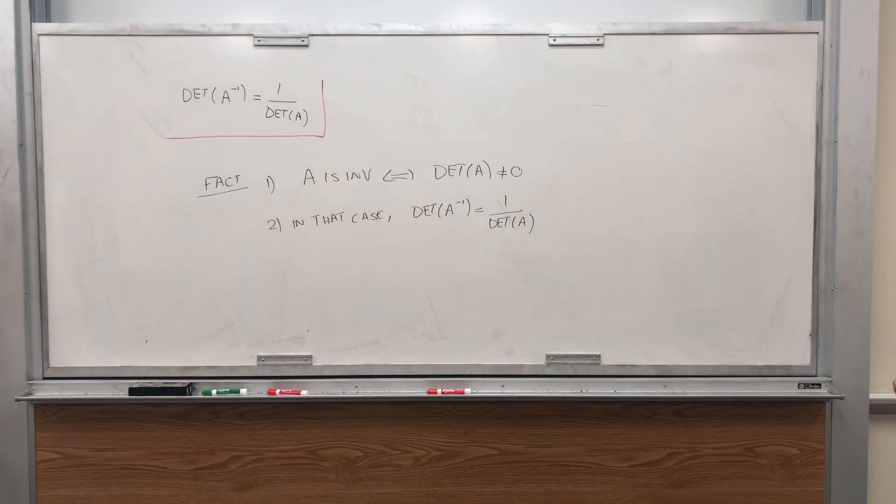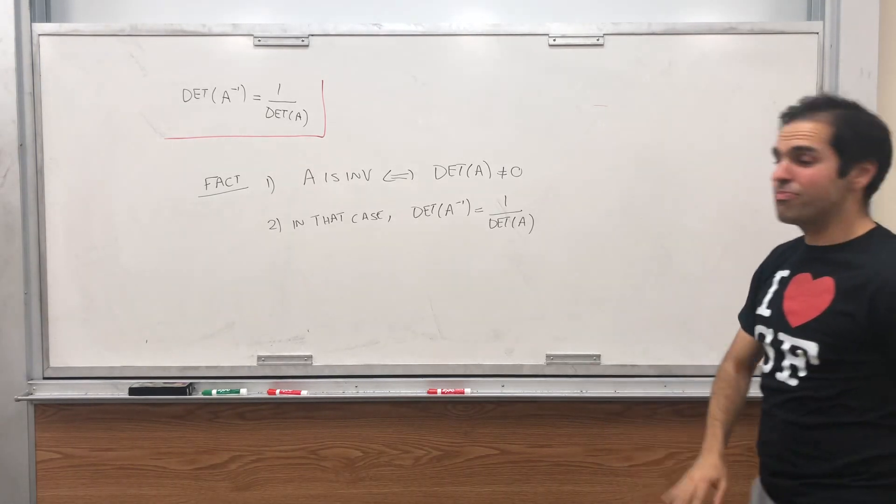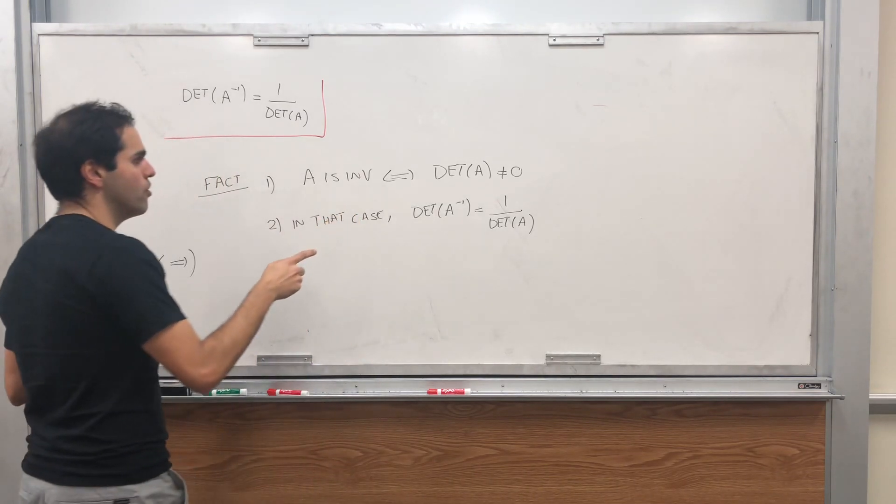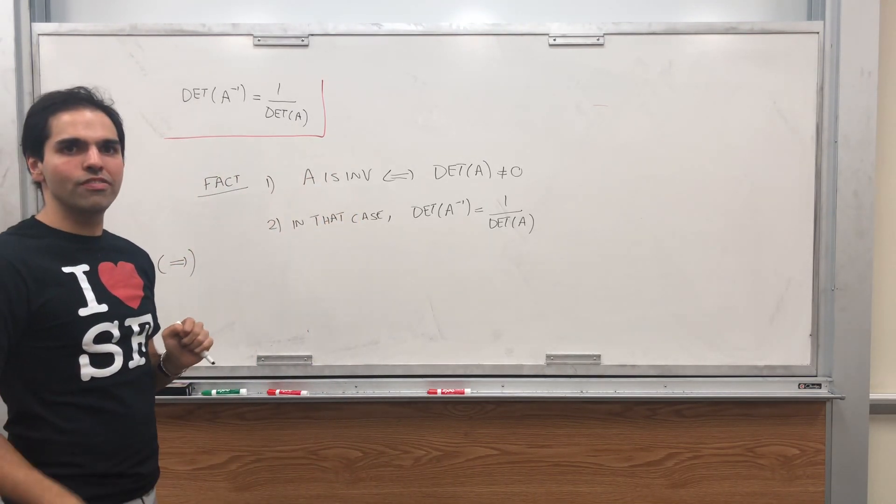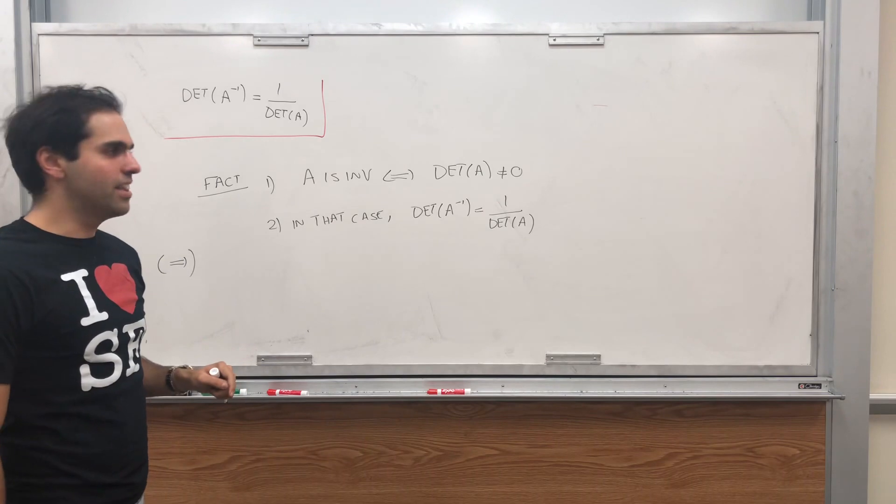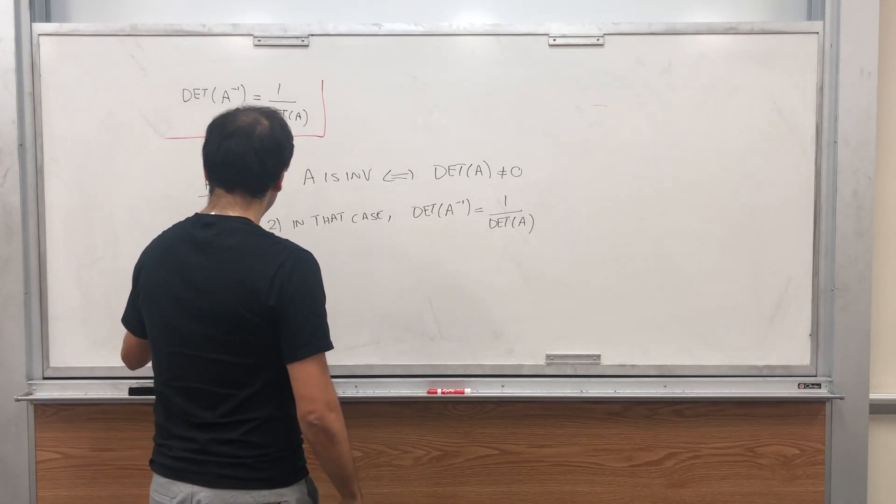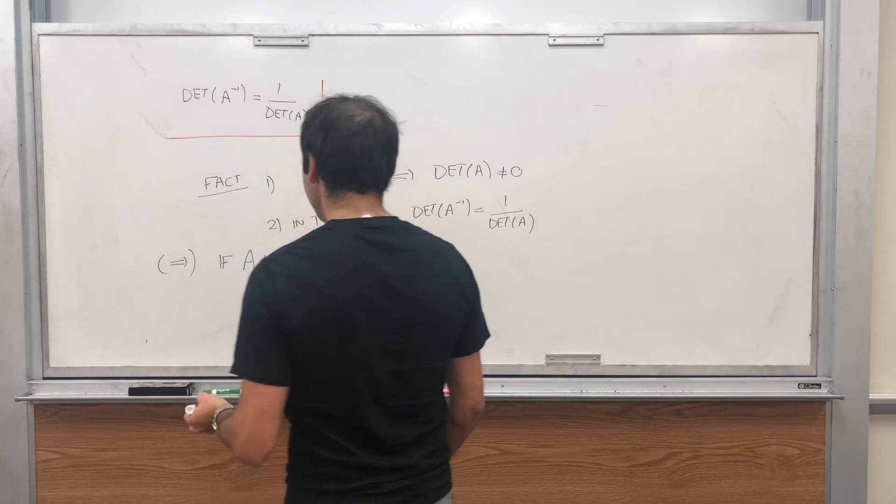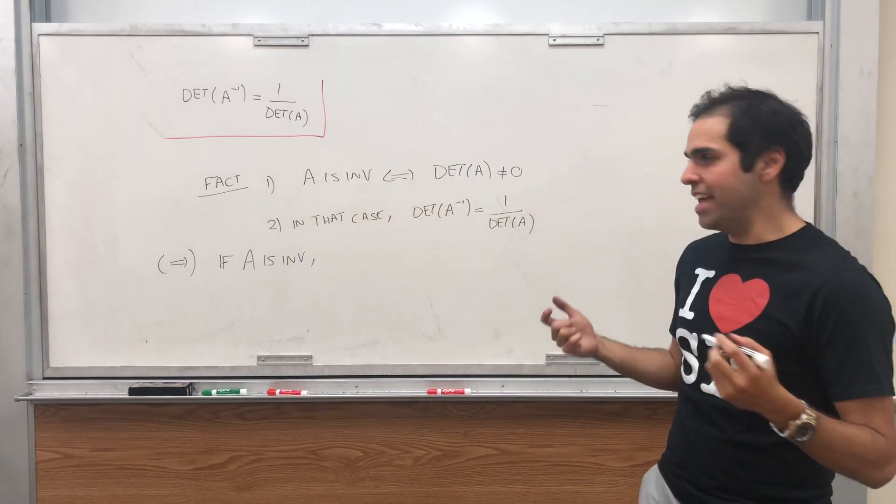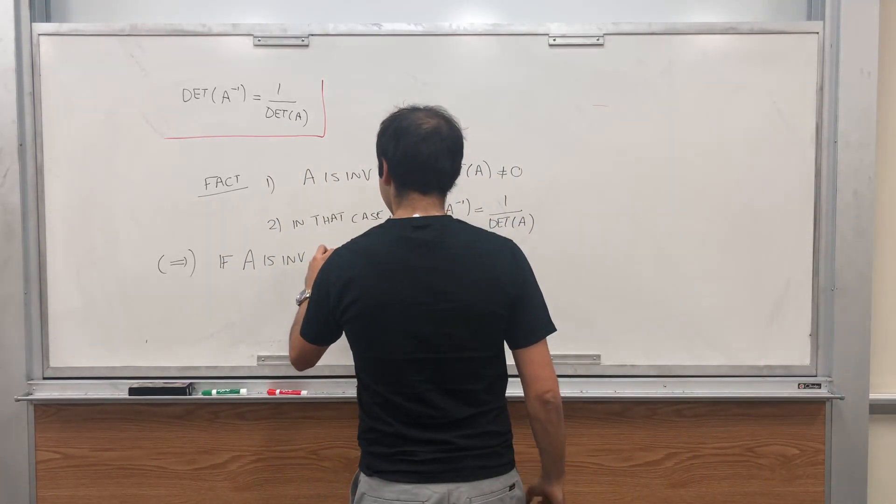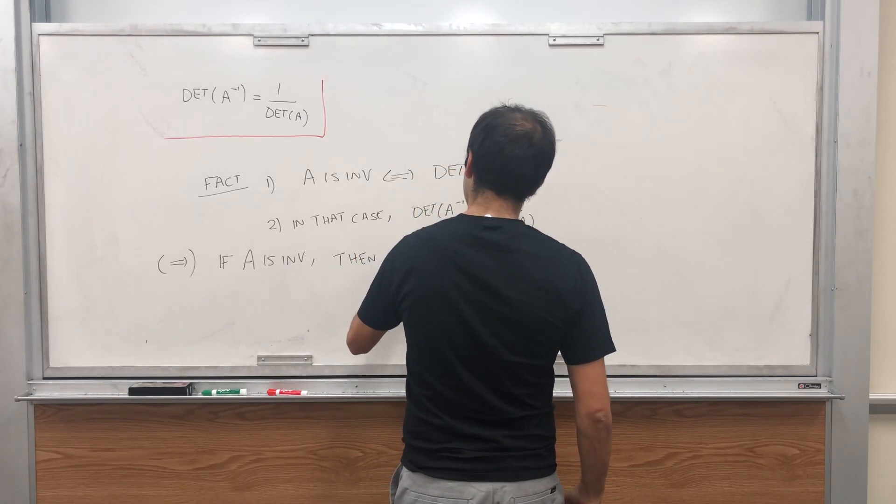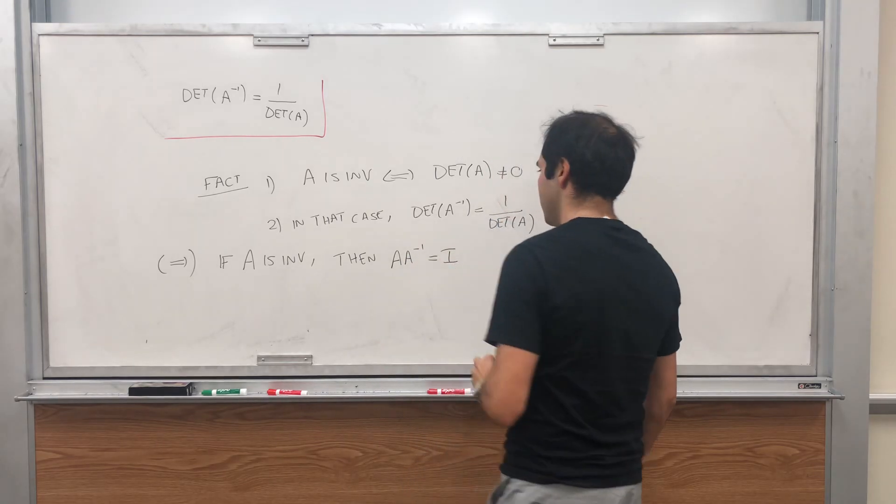Let me do the direction people are probably interested in. So let's first of all show if A is invertible, then the determinant of A is non-zero, and we get this formula. So if A is invertible, what that means is there is some matrix A inverse such that A times A inverse is the identity.